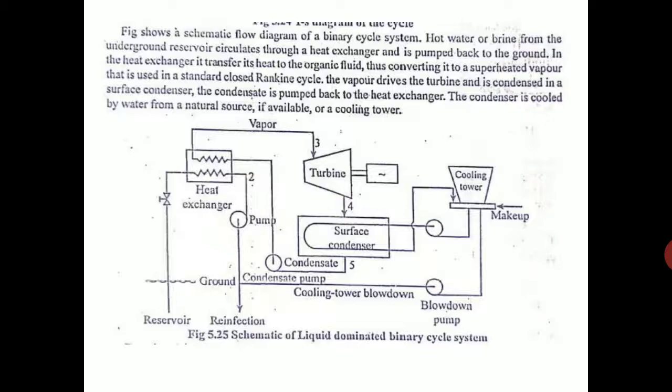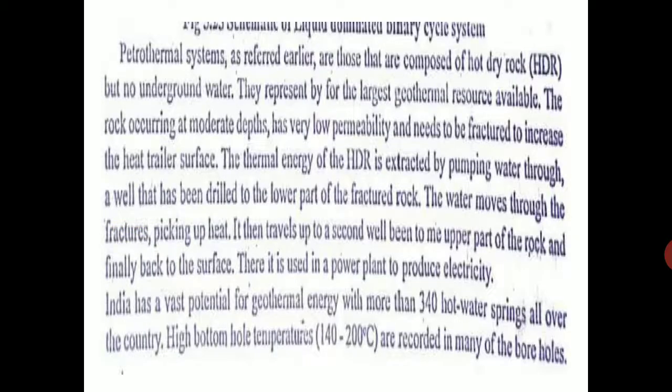This is the sketch of the liquid dominated binary cycle system. Binary means you are using a refrigerant here. India has a vast potential of geothermal energy with almost 340 hot springs all over the country. The temperatures are 140 to 200 degrees in these borewells. We can make use of the heat energy. These hot springs are available in Himalayan range, Cambay basin, Narmada-Tapti shores, west coast Konkan region, DVC region, and Godavari valley.